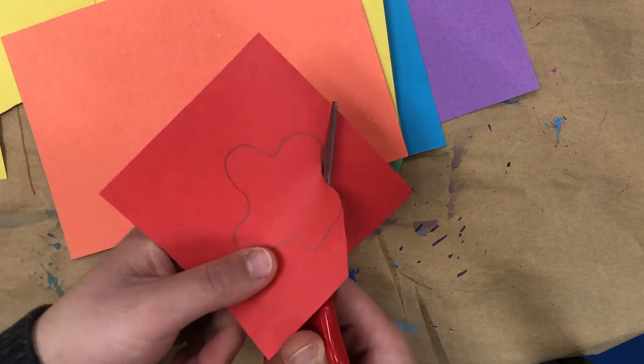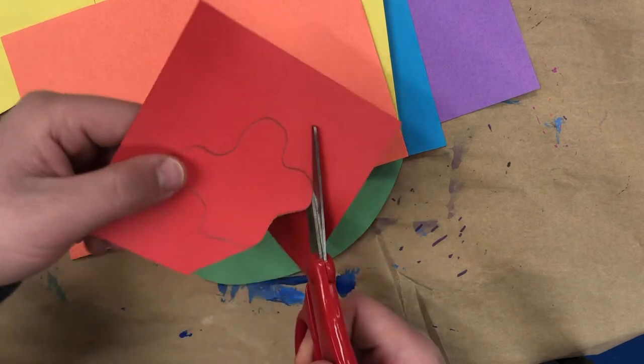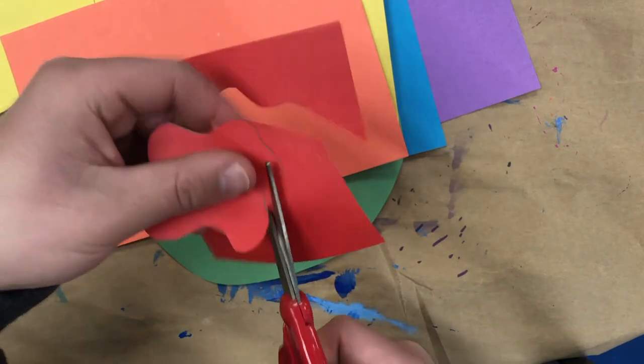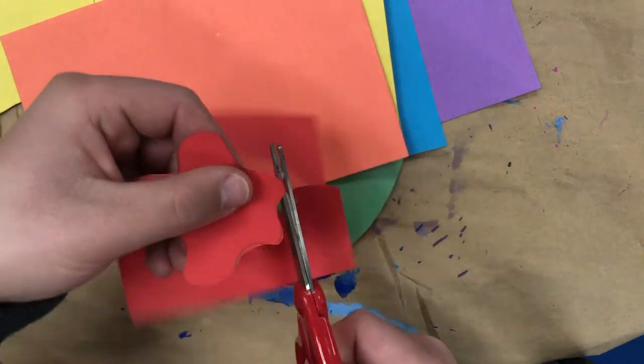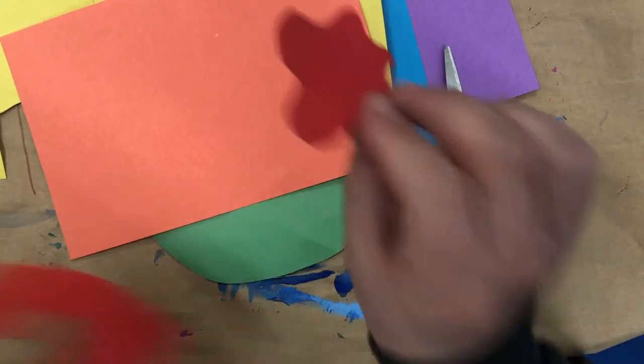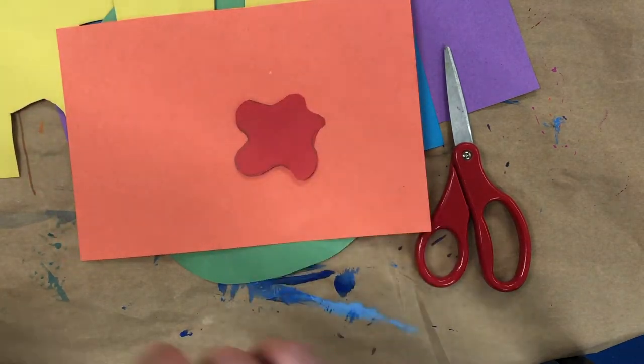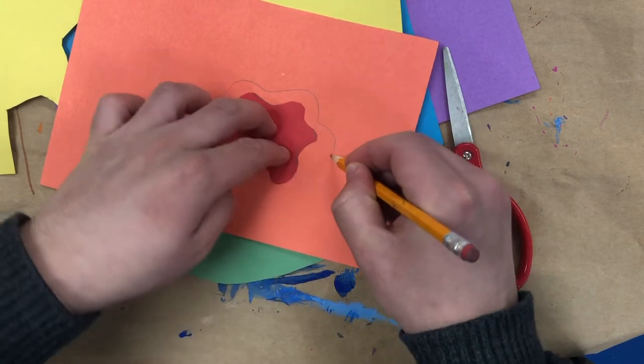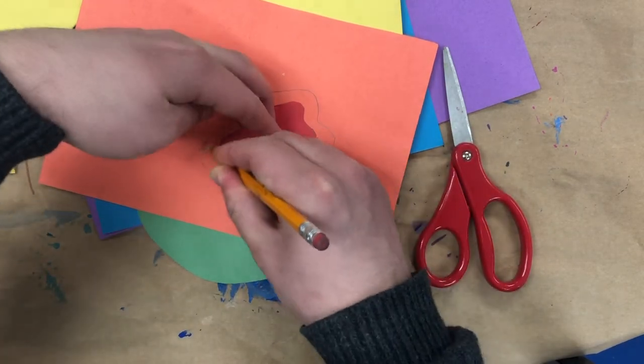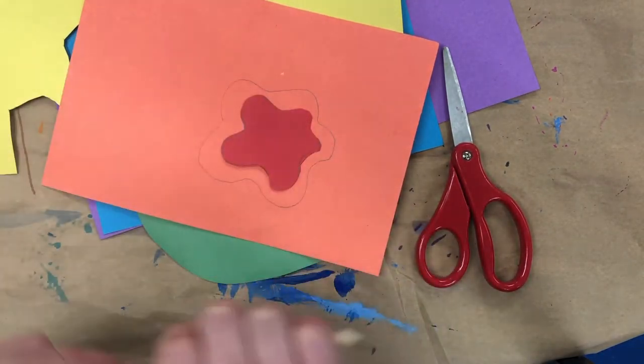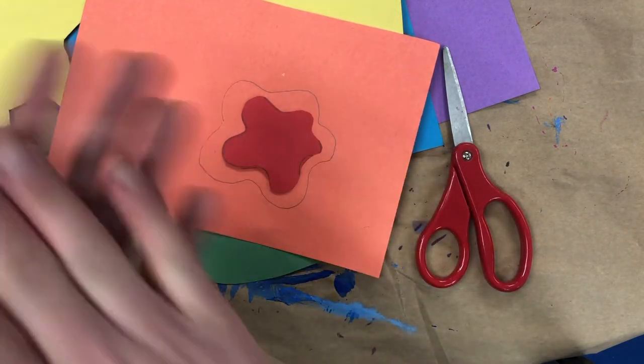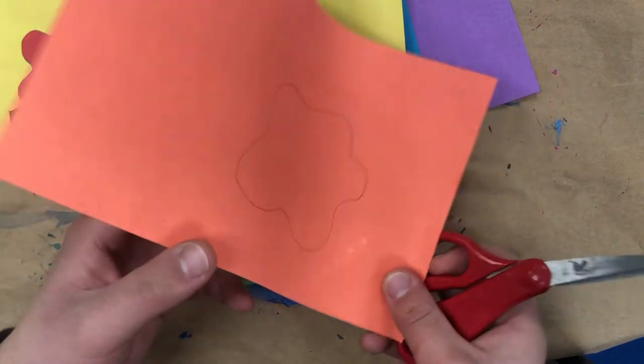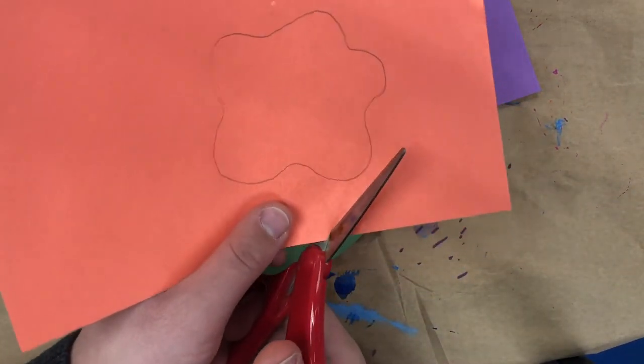I'm going to start cutting out my first shape. And once I have my first shape cut out, I'm going to take my next piece of paper and I'm going to trace just a little bit bigger around it. And then I'm going to do this for each color, cut it out, and then stack and glue them together to create my Jen Stark inspired collage.